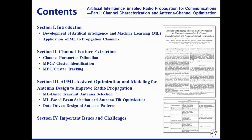This invited paper includes four sections. In section one, we introduced the development history of artificial intelligence and machine learning, and the application of machine learning to propagation channels. Then the machine learning based channel feature extraction methods are presented and compared in section two. Next, the AI or machine learning assisted optimization and modeling for antenna design, which aims to improve the radio propagation.